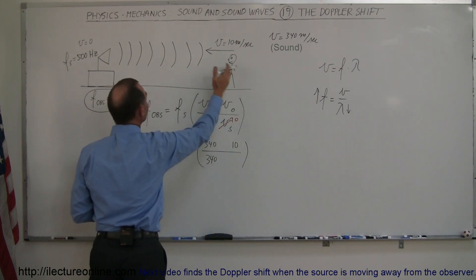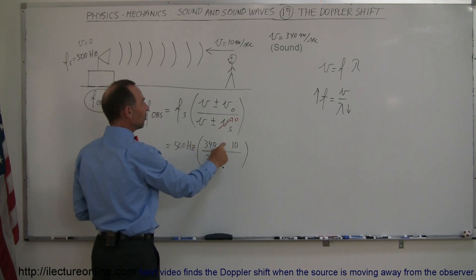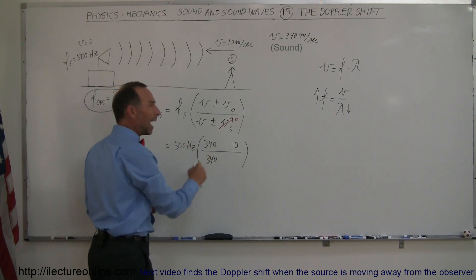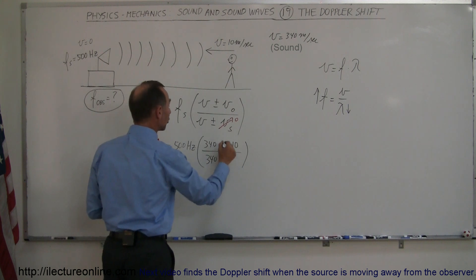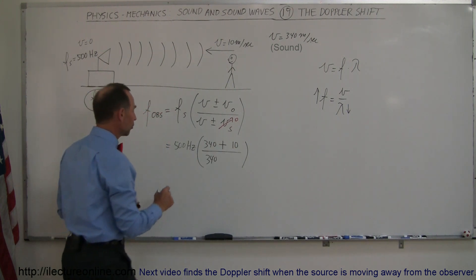So the result is that this observer will hear a higher frequency. So we want this number to be bigger. Since this is in the numerator, how do you get a bigger number? By making the numerator larger. So we need a plus and that will give us the correct frequency. So let's find out.